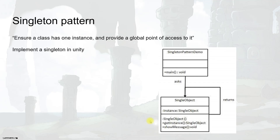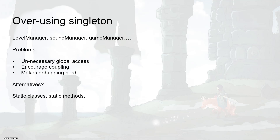As shown in this UML diagram, when we request a reference to the singleton object — say the database connection — the system first checks if an object has already been created from that class. If there is no object, it creates a new one and returns that reference. Otherwise, it returns the previously created object as a reference.